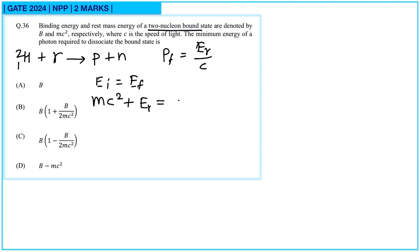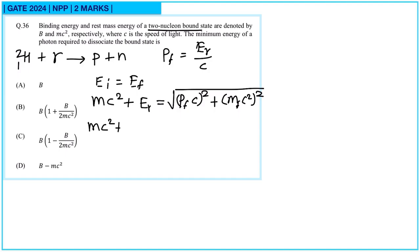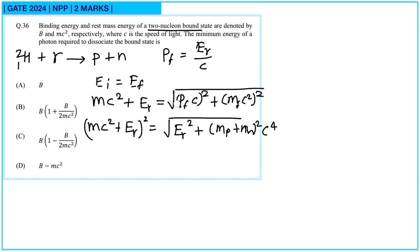Using the relativistic energy formula, the final energy is √(Pf·c)² + (Mf·c²)², where final momentum Pf = Eγ/c. Squaring both sides: (Mc² + Eγ)² = Eγ² + (Mp + Mn)²c⁴. The final mass is Mp + Mn. Expanding and simplifying gives: 2Eγ·Mc² + M²c⁴ + Eγ² = Eγ² + (Mp + Mn)²c⁴.